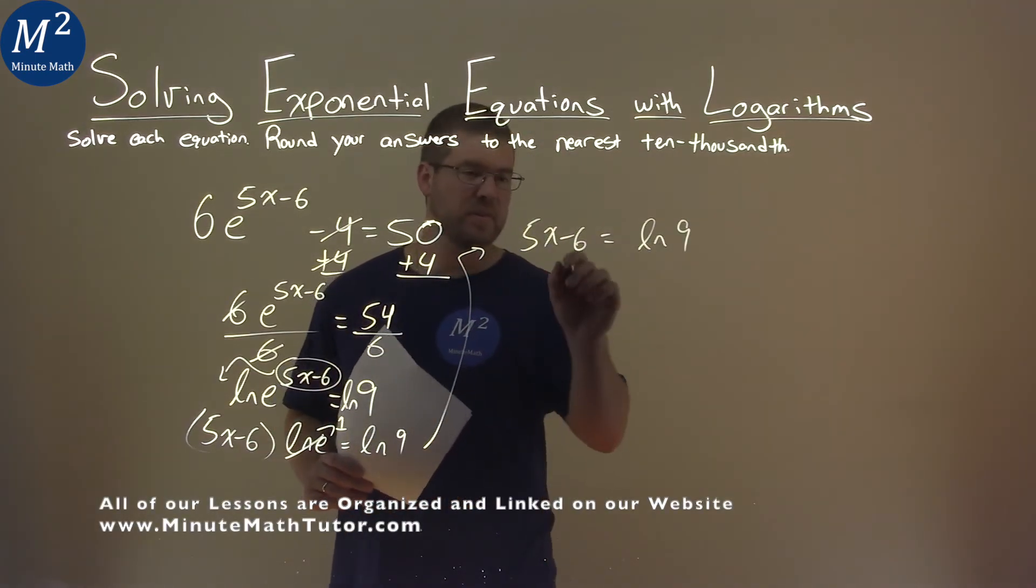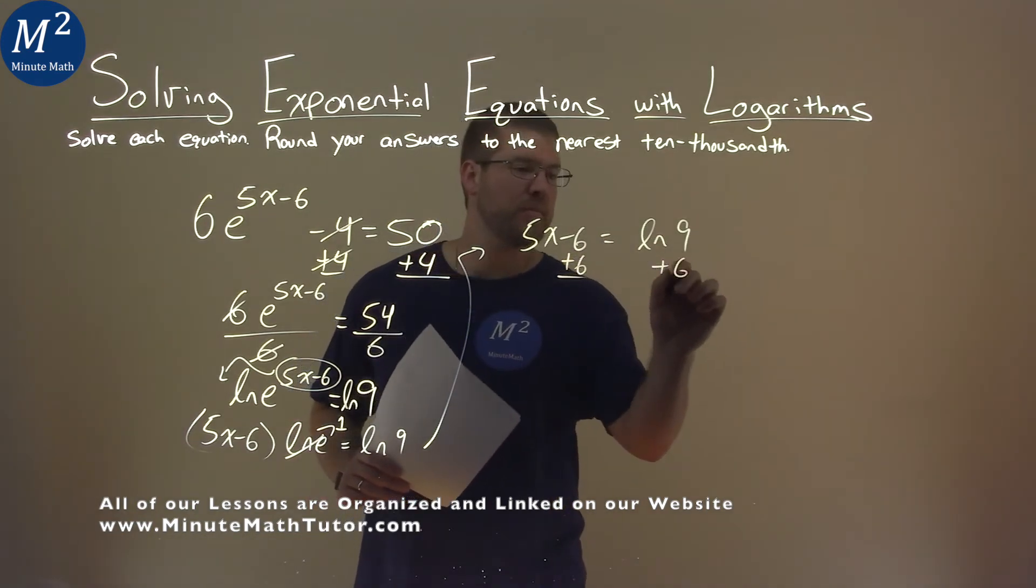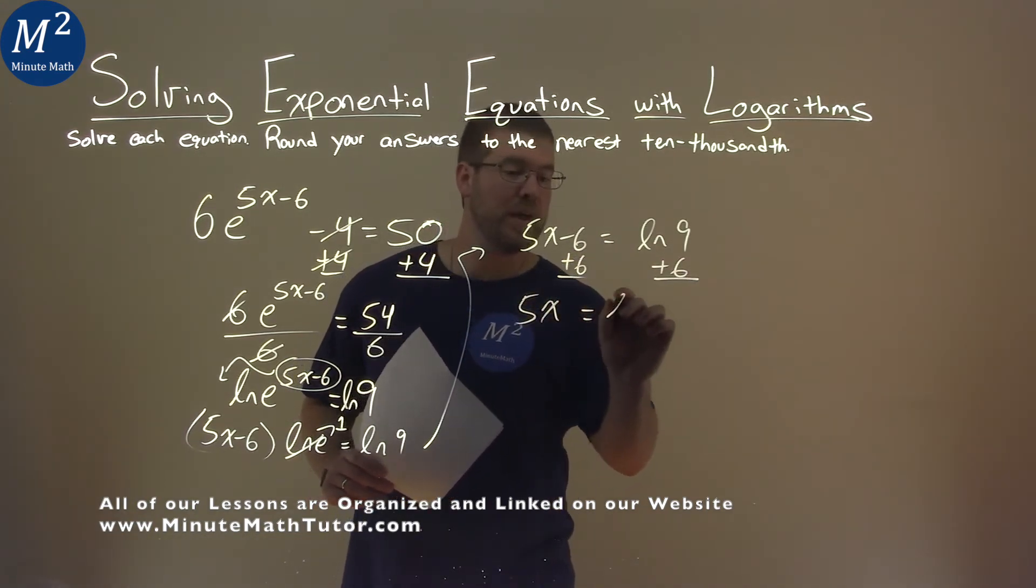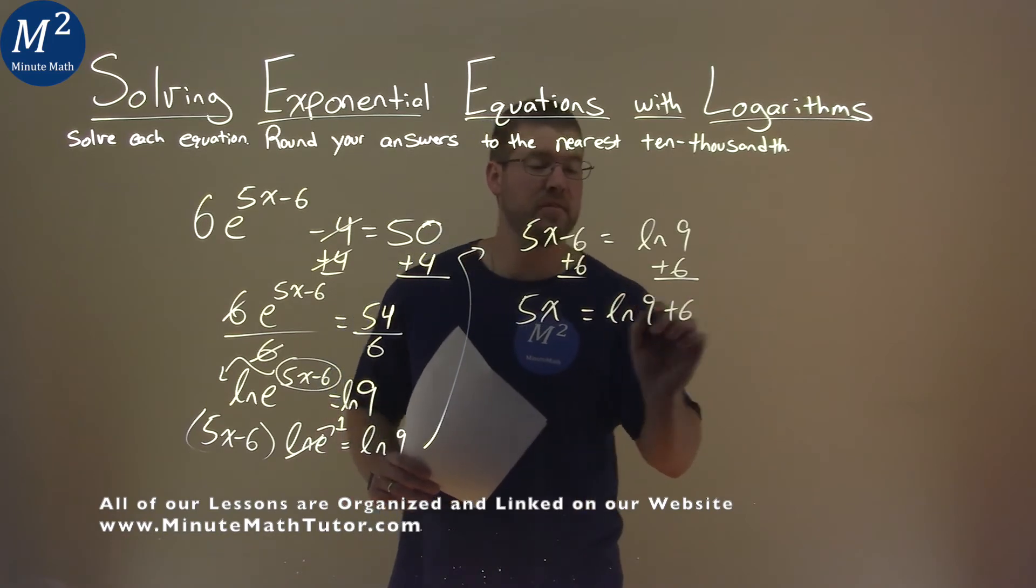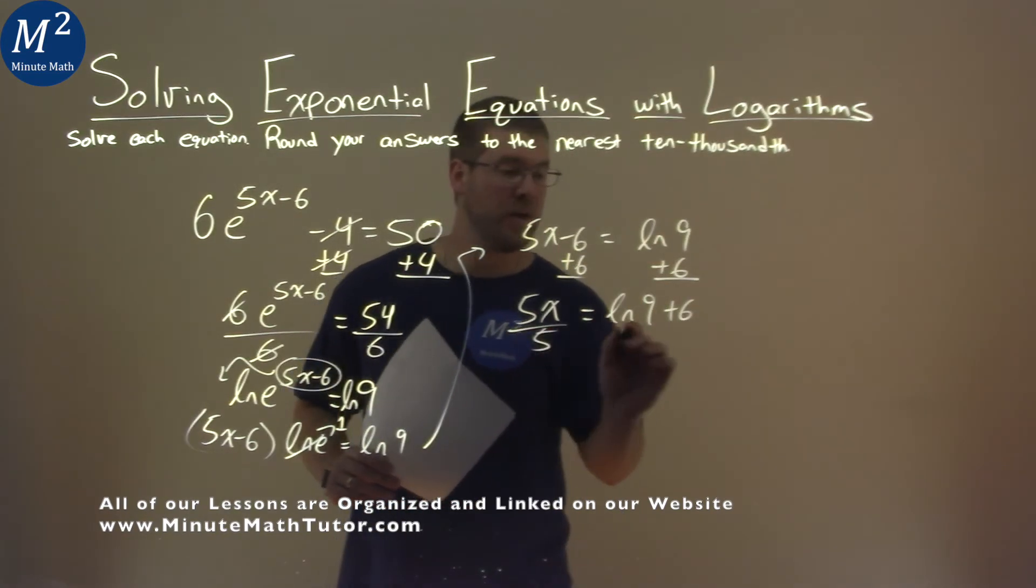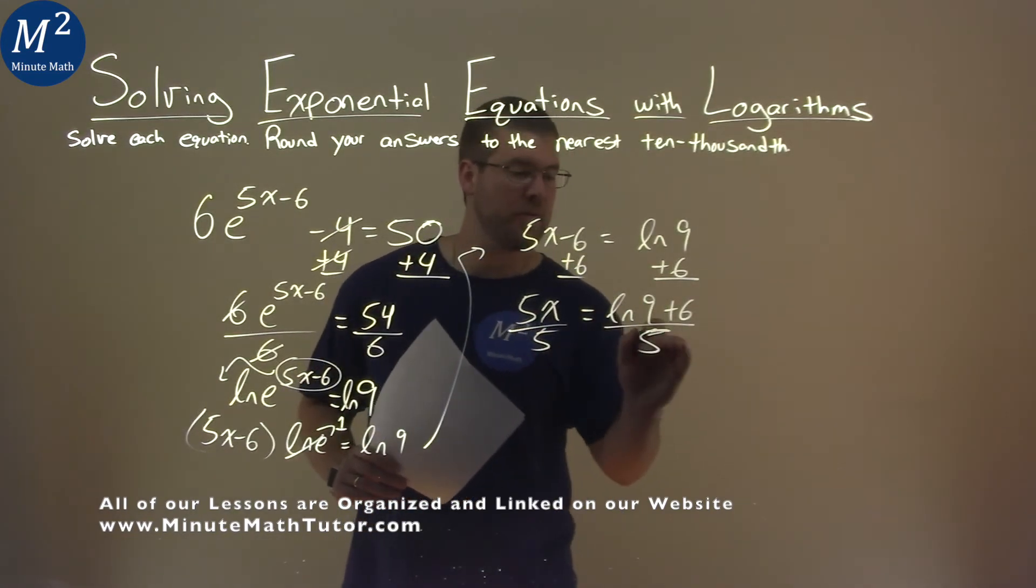We're solving for x here. Add 6 to both sides. 5x equals natural log of 9 plus 6. Divide both sides by 5, and x is now by itself.